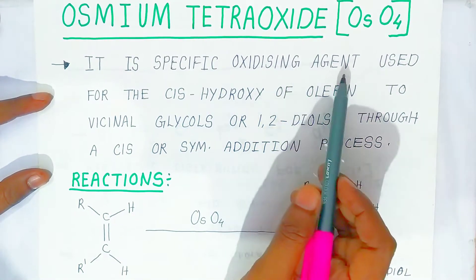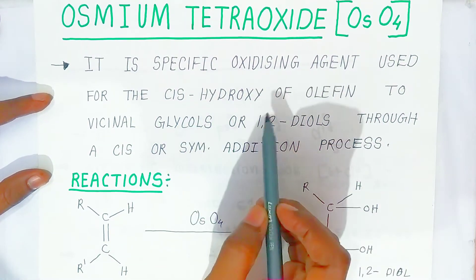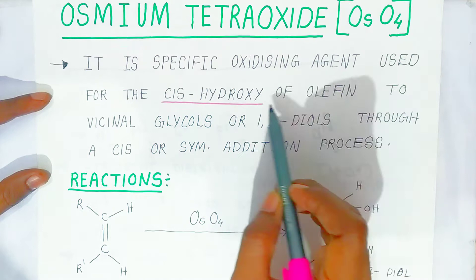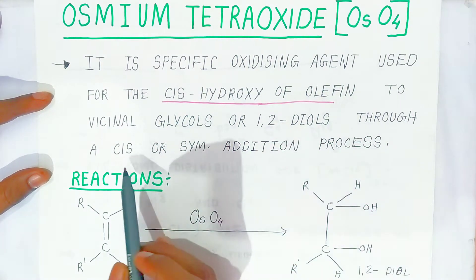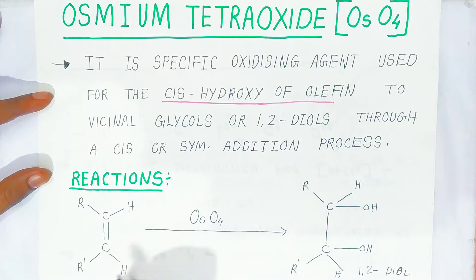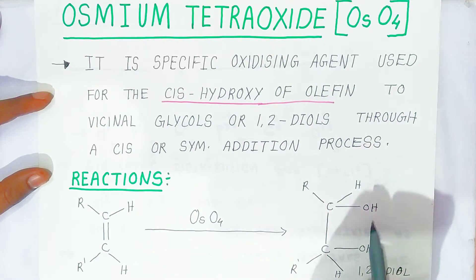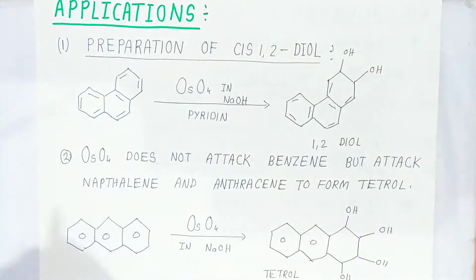It is a specific oxidizing agent used for the cis-hydroxy of olefins to vicinal glycols or 1,2-diols through a cis and symmetrical addition process. Here students, you have this type of cis type of olefins. In presence of osmium tetroxide, it is converted into 1,2-diol because two hydroxy groups are added. This is the reaction.